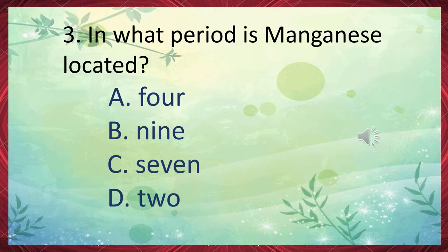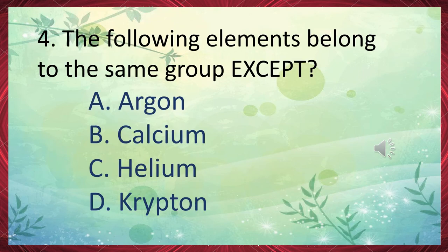Number 3: In what period is manganese located? A. 4, B. 9, C. 7, D. 2. The answer is letter A, 4. Number 4: The following elements belong to the same group except — A. Argon, B. Calcium, C. Helium, D. Krypton. The correct answer is letter B, calcium.